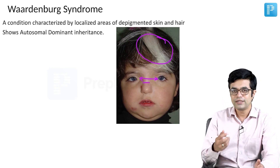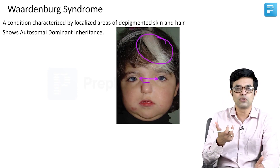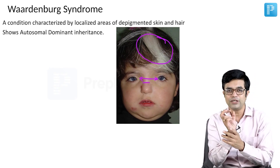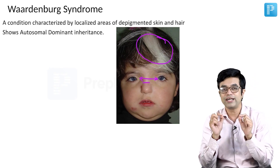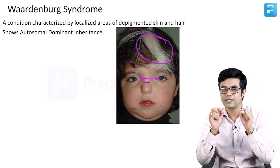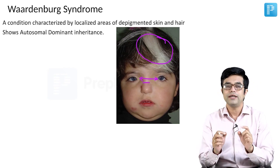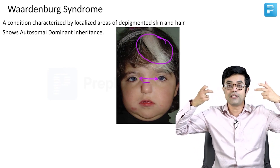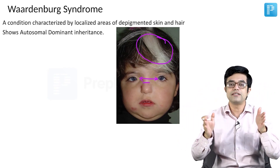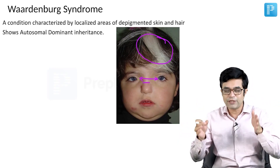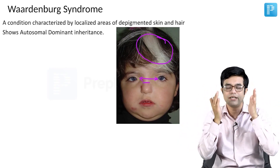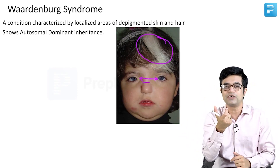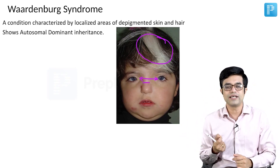In telecanthus, the gap between the medial canthi is more than normal, but one of the eyes usually has some degree of strabismus. So if you calculate the interpupillary distance, that is always normal. In hypertelorism, only the eyes are moved away, so the interpupillary distance will also be increased. In telecanthus patients, one eye is more towards the center, so the interpupillary distance is normal — only the gap between the two canthi is more.